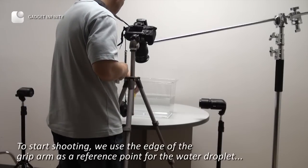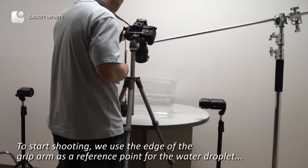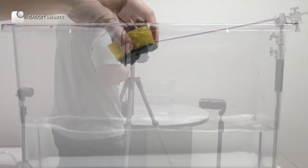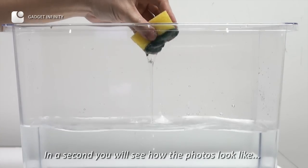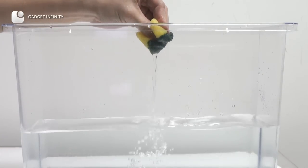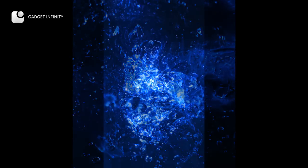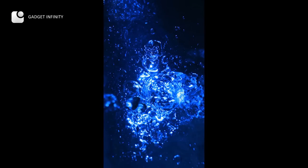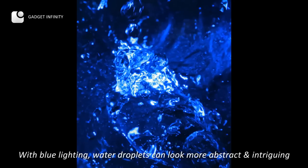To start shooting, we use the edge of the grip arm as a reference point for the water droplet. In a second, you will see how the photos look like. In the blue light tank, water droplets can look more abstract and intriguing.